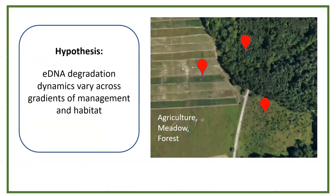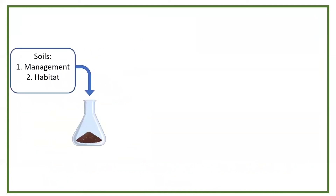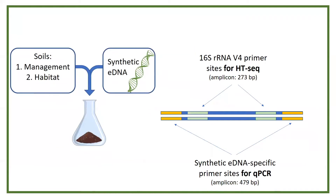For my habitat gradient, I chose to sample more locally at Monkey Run, right here in Ithaca, New York, collecting samples from agriculture, meadow, and forest soils. As I was testing this hypothesis, I was also bearing in mind two follow-up questions: what is controlling the degradation and stabilization dynamics of eDNA in soils, and over what time scale do we expect any eDNA-driven bias to be apparent? To answer these questions, I performed laboratory microcosm experiments where I put soil into a microcosm and then added a synthetic eDNA marker.